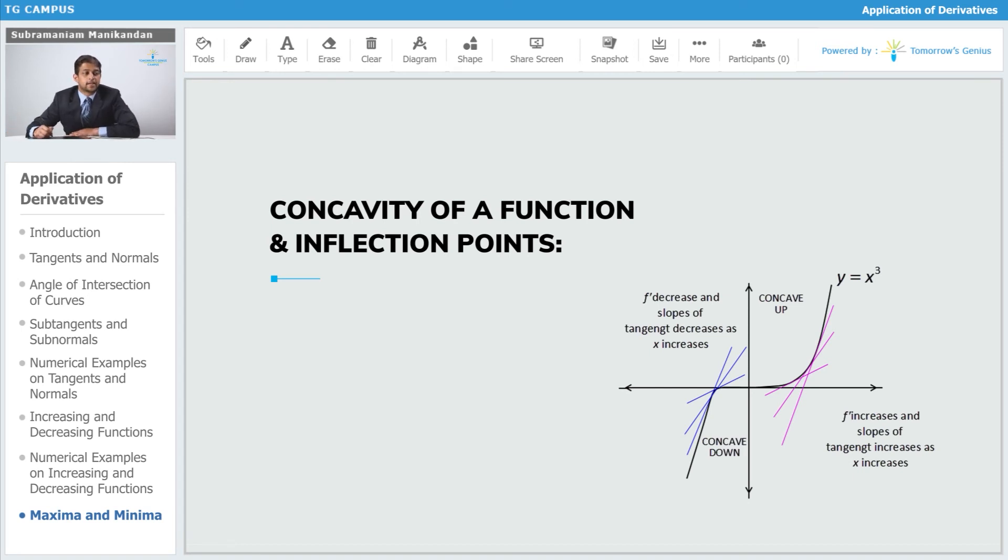So f'(x) decreases and the slopes of tangent decreases as x increases, whereas on the right side of the function, f'(x) increases and slopes of tangent increases as x increases.